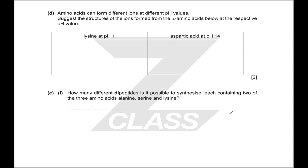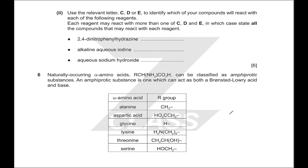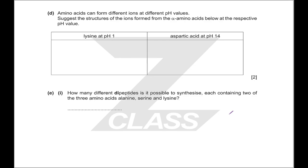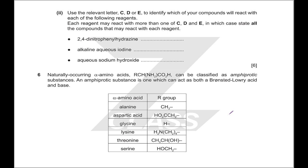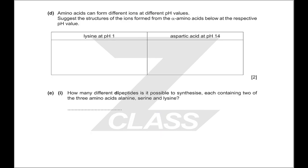Amino acids can form different ions at different pH values. Aspartic acid has a second carboxylic acid group; lysine has an extra nitrogen group. At low pH, lysine — with its nitrogen groups — will grab extra H⁺ ions and form NH₃⁺ on all its NH groups. At pH 14, aspartic acid will lose the hydrogens from both of its acid groups. At pH 1 your acid groups still have their hydrogens; at pH 14 your nitrogen groups are not gaining any extra hydrogens.